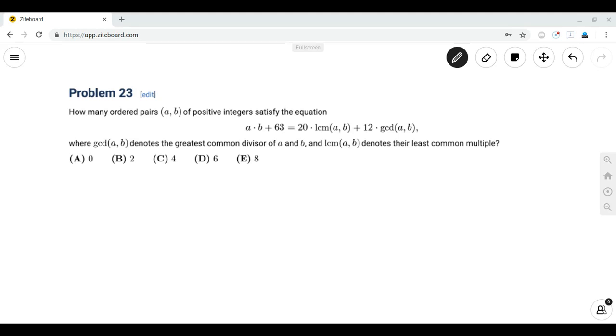The problem reads, how many ordered pairs of positive integers satisfy the equation a times b plus 63 is equal to 20 times the LCM of a and b plus 12 times the GCD of a and b, where GCD ab denotes the greatest common divisor of a and b, and LCM of a and b denotes their least common multiple.